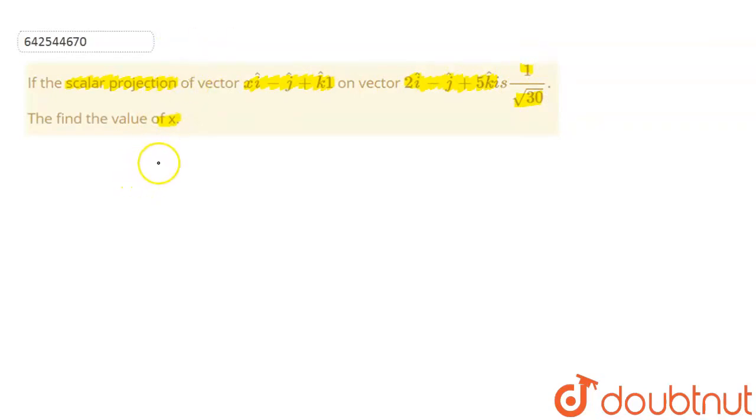So now what are the given vectors? One is, let us suppose, a vector is x i cap minus j cap plus k cap. The b vector is 2 i cap minus j cap plus 5 k cap.